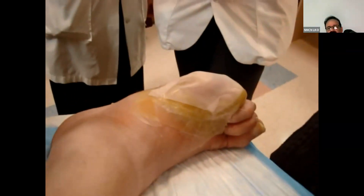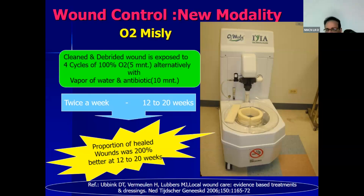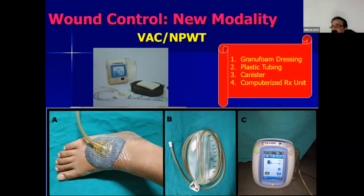Another new modality is O2 Misli. In this, the cleaned and debrided wound is put in a jar or canister and the wound is exposed to four cycles of 100% oxygen for five minutes alternately with vapor of water and antibiotic for 10 minutes. This therapy is given twice a week and has been found to be 200% more effective in comparison to standard care. This is not yet available in India.